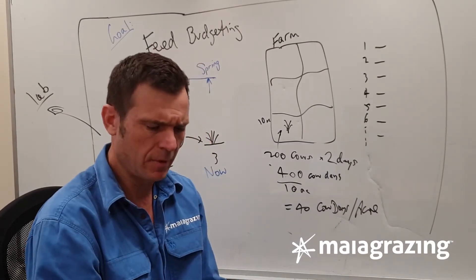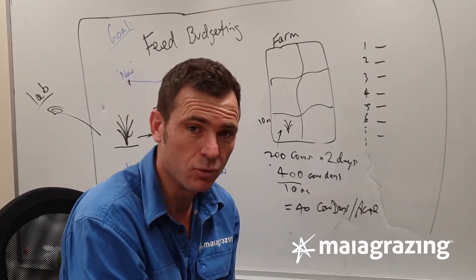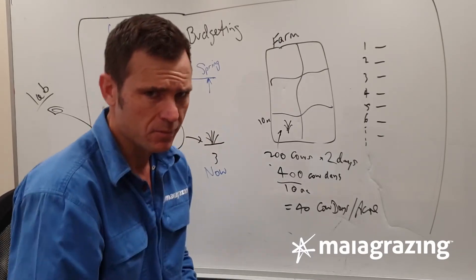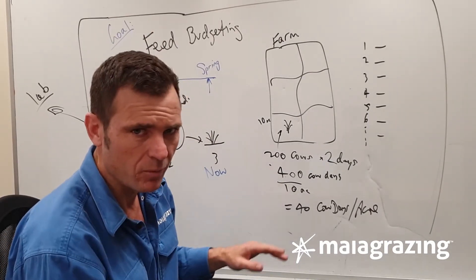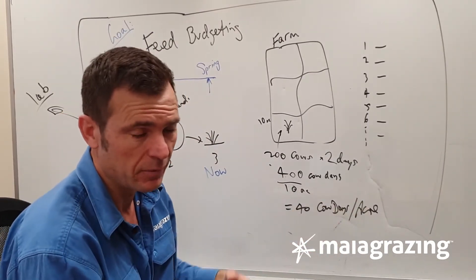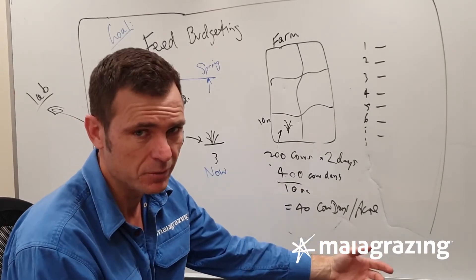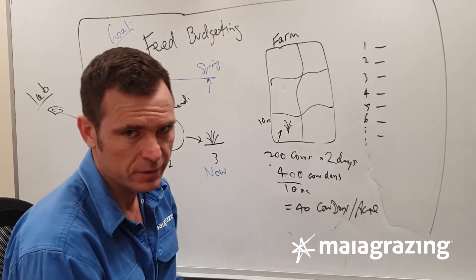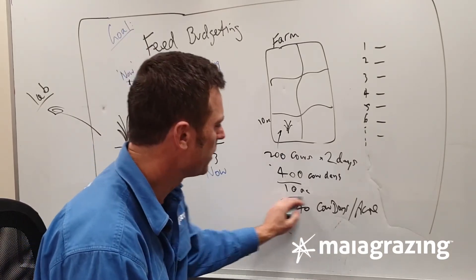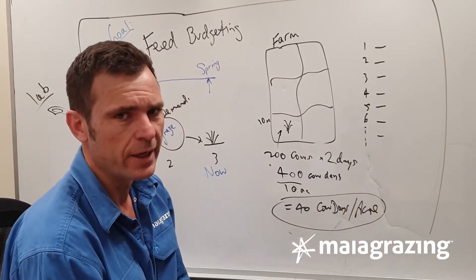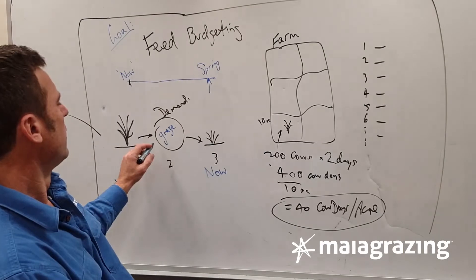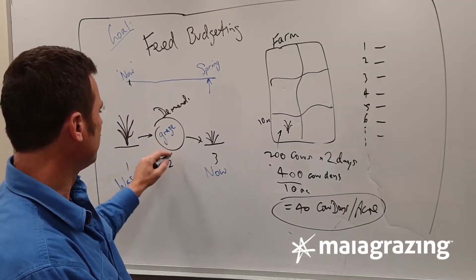So is 40 cow days per acre good or bad? Well, it doesn't really matter. What matters is whether or not we've left behind how much we want for the next graze and whether we're going to have enough time to give that pasture recovery before we graze it again. But let's just slide this through. We've got 40 cow days per acre there that we've taken out.